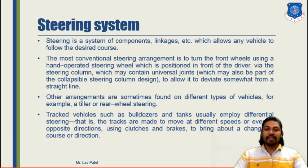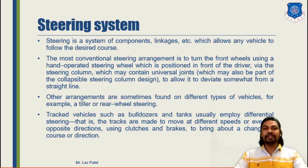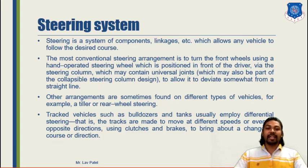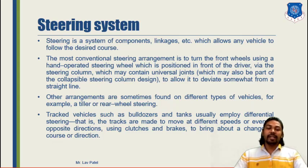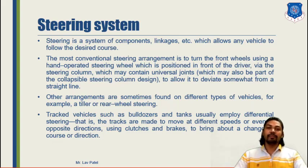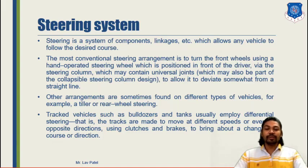Tracked vehicles such as bulldozers and tanks usually employ differential steering, where the tracks are made to move at different speeds or even in opposite directions. In general steering systems we use a rack and pinion system where left and right wheels are connected together, but in tracked vehicles like bulldozers and tanks there are different arrangements for individual axles — separate arrangements for left and right axles — allowing independent control of RPM and direction of each wheel.